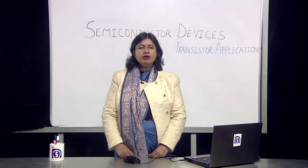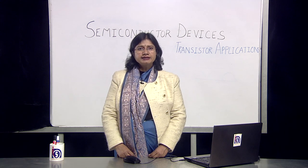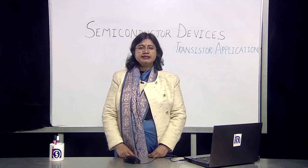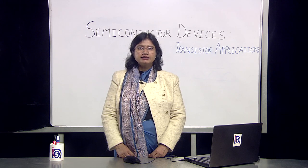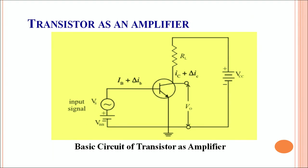To understand the working of a transistor as an amplifier, let's understand the circuit diagram and discuss its working. This is a basic circuit of a transistor as an amplifier. Looking at this circuit, the transistor is connected in a common emitter configuration, which means that the emitter is common to the input as well as the output circuit.